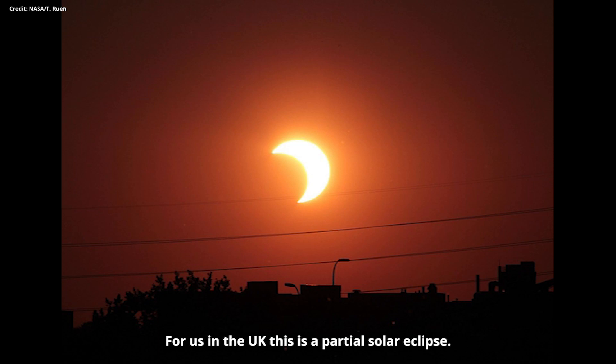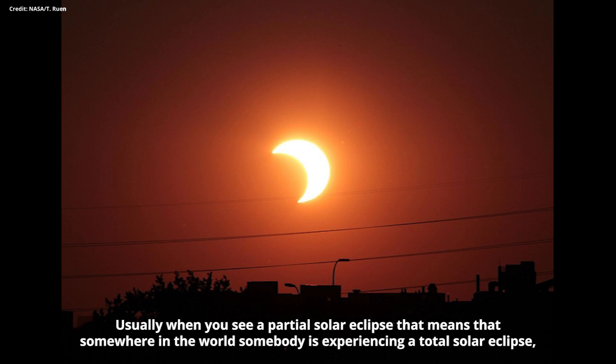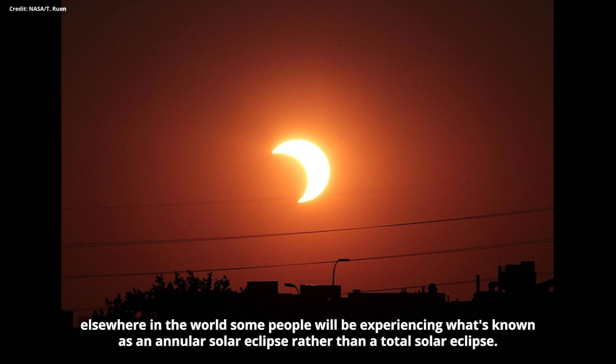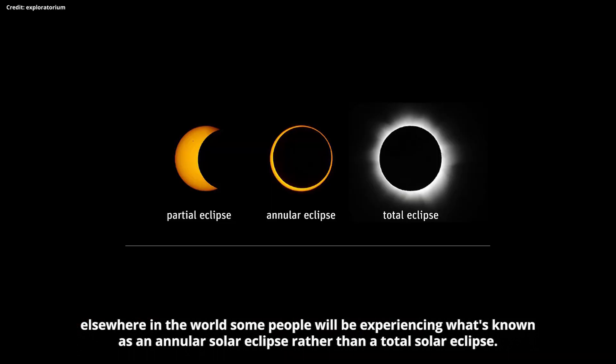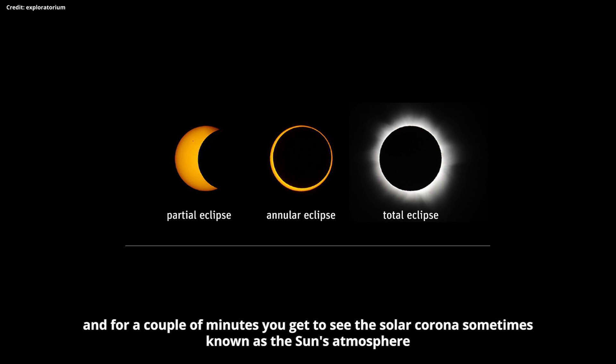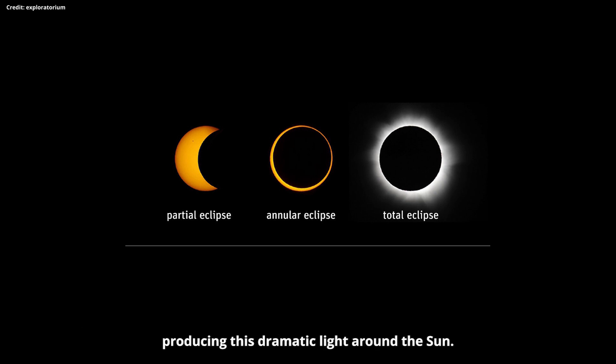So for us in the UK, this is a partial solar eclipse. Usually when you see a partial solar eclipse, that means that somewhere in the world, somebody is experiencing a total solar eclipse. For this eclipse, that isn't the case. Elsewhere in the world, some people will be experiencing what's known as an annular solar eclipse rather than a total solar eclipse. During a total solar eclipse, the moon covers the whole of the sun's surface. And for a couple of minutes, you get to see the solar corona, sometimes known as the sun's atmosphere, producing this dramatic light around the sun.